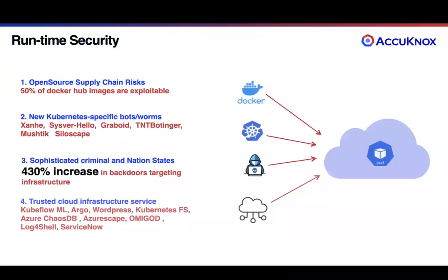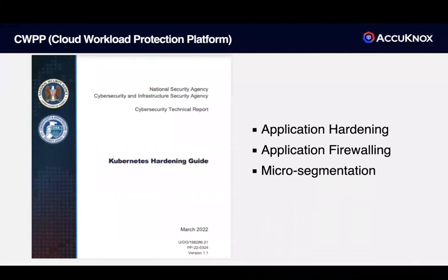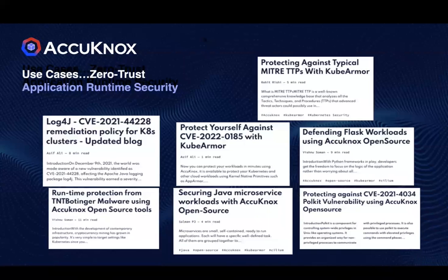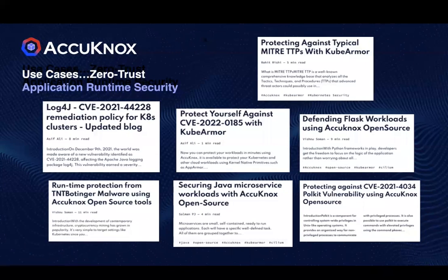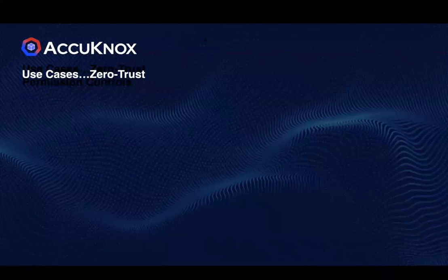Acunox delivers sophisticated security that protects you against advanced attacks. As a part of CWPP, we deliver advanced security harnesses outlined in this document from the National Security Agency or NSA. This is an amazing document — if you haven't read it, please do so; it's a must-read. We deliver capabilities like application hardening, application firewalling, and micro-segmentation. We have tested Acunox against a number of zero-day attacks, including Log4j and SolarWinds. Check out some of these blogs to learn more.